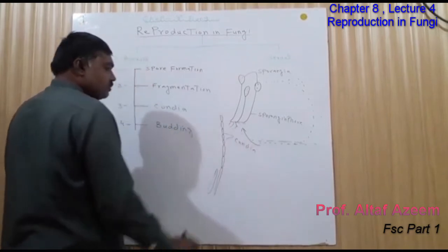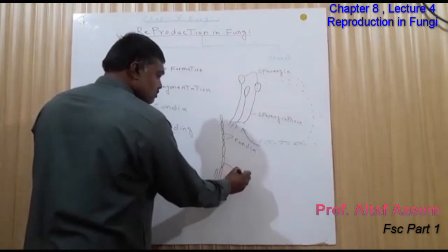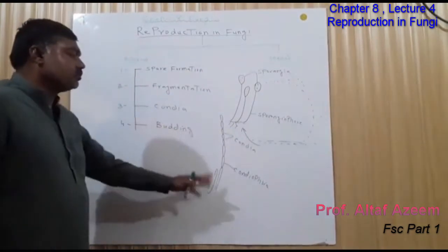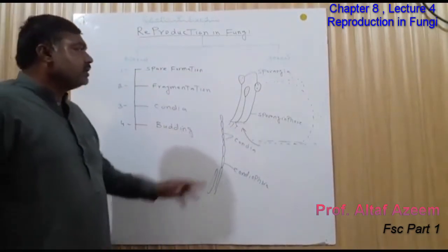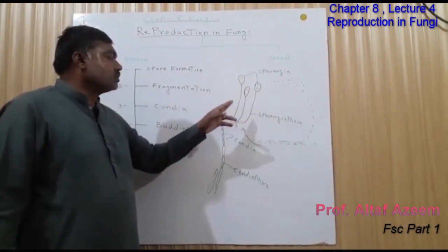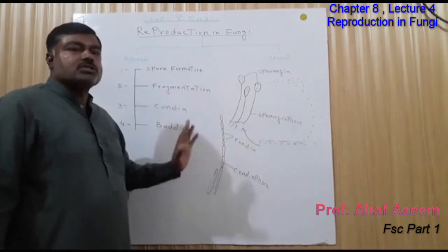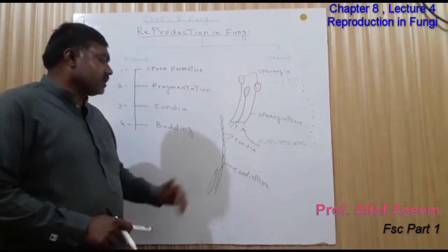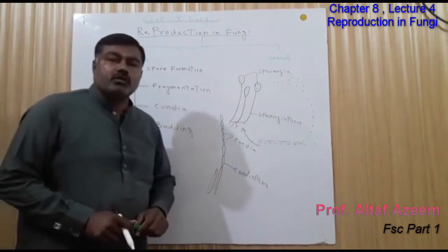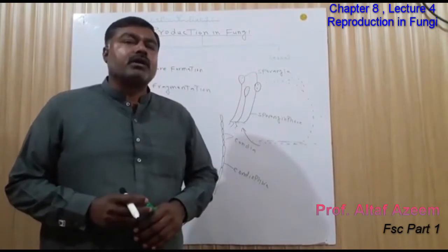Conidia are produced in the form of a chain on a branch known as a conidiophore. These conidia then detach from the conidiophore and germinate into a new fungal body.